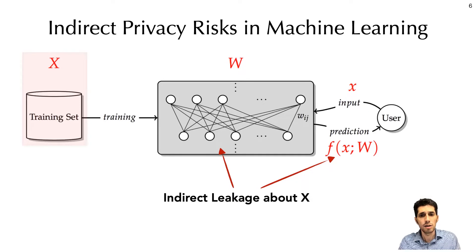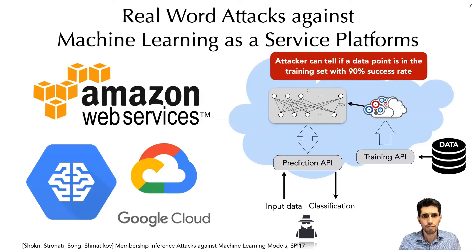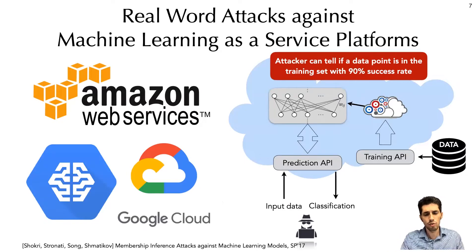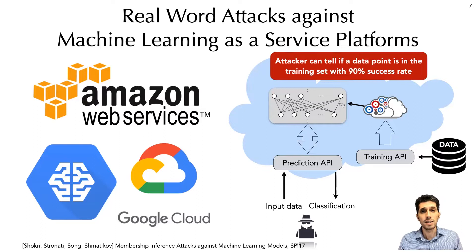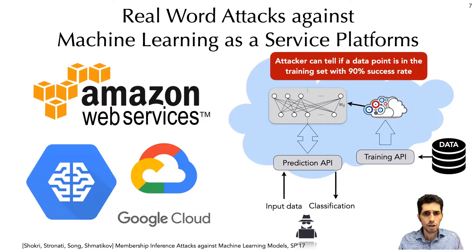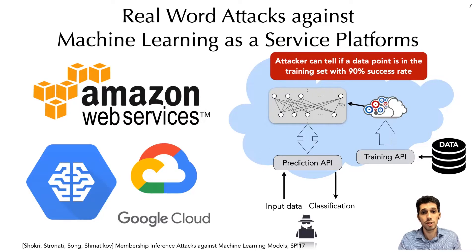And this is a real threat. Consider machine learning as a service platforms provided by virtually all major cloud service providers. An entity can upload data to the cloud, train a model, and provide access to users to do predictions through well-defined prediction APIs. We showed that without having any information about which models are being trained, and without having access to the intermediate steps of the computation as a user of this system, an adversary can tell with high confidence and accuracy if a data point has been included in the training set of a model. So an authorized user can infer sensitive information about data which it does not have access to, obviously violating data privacy.